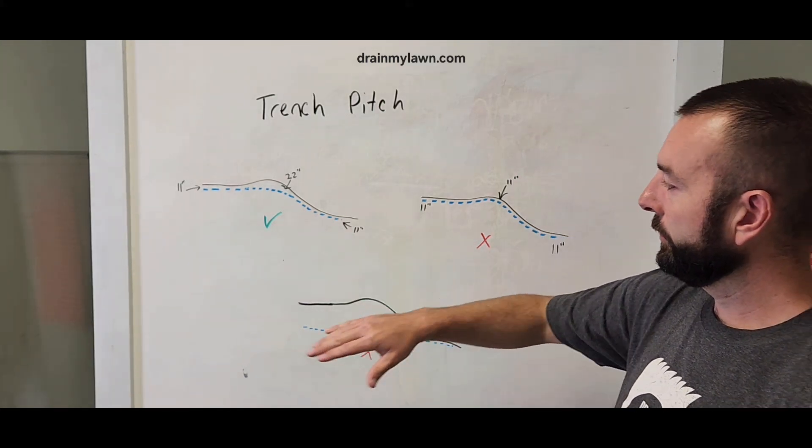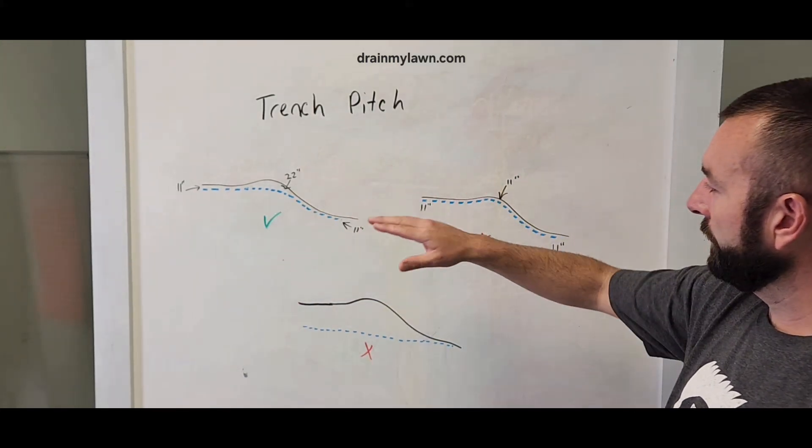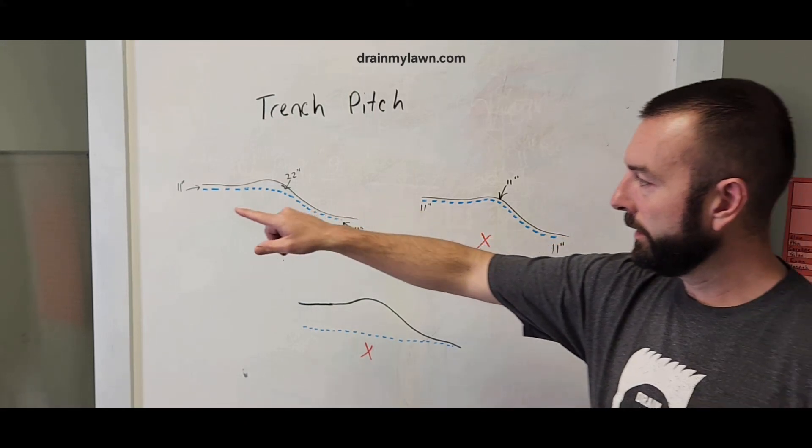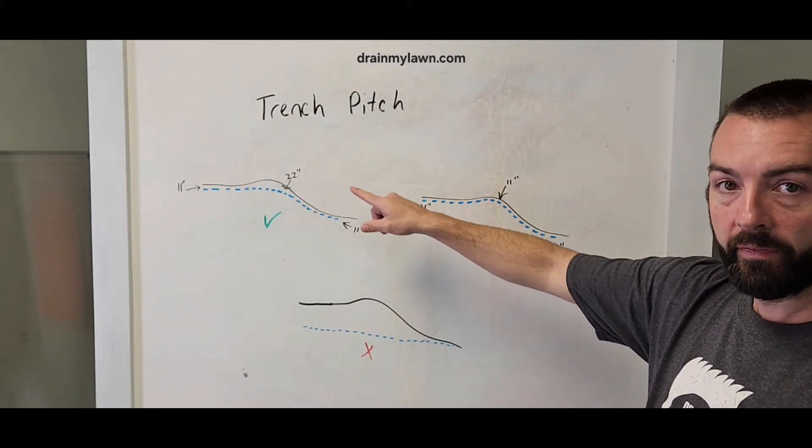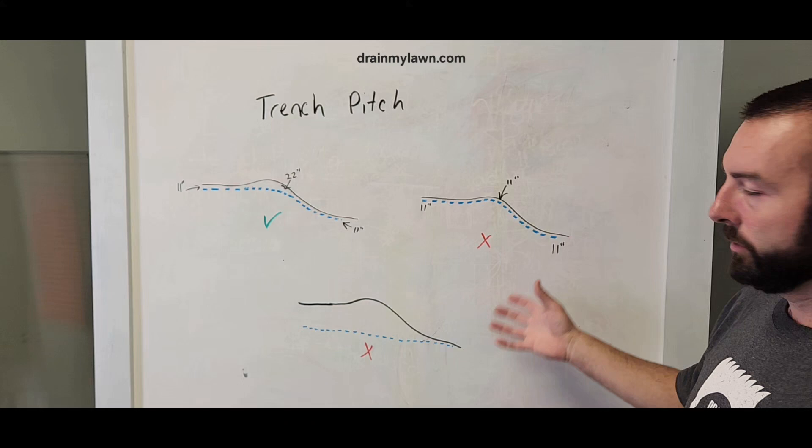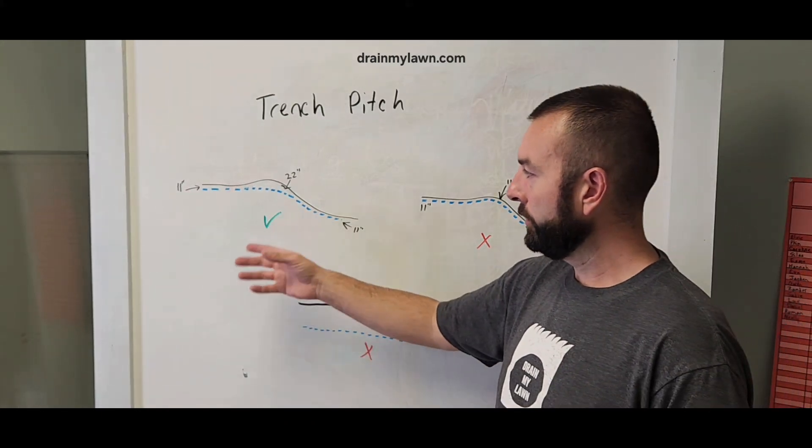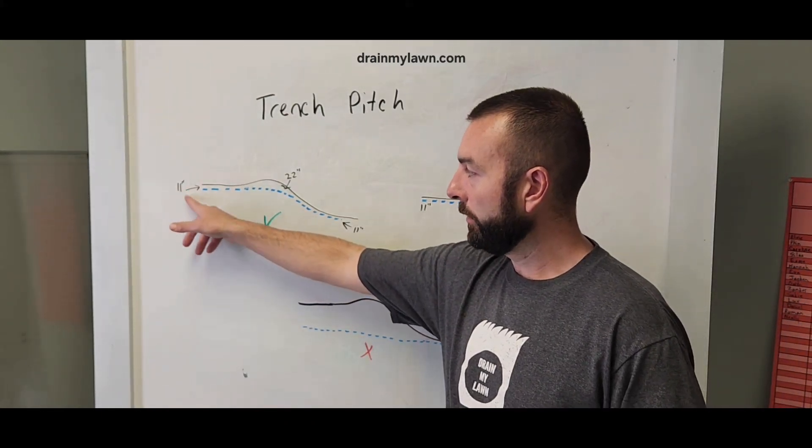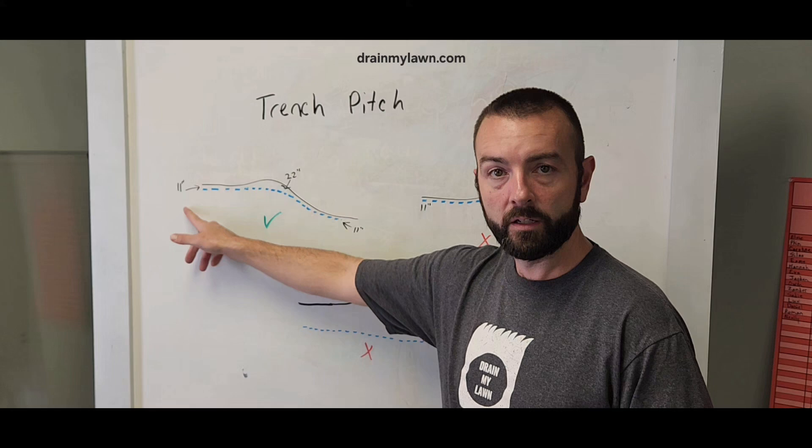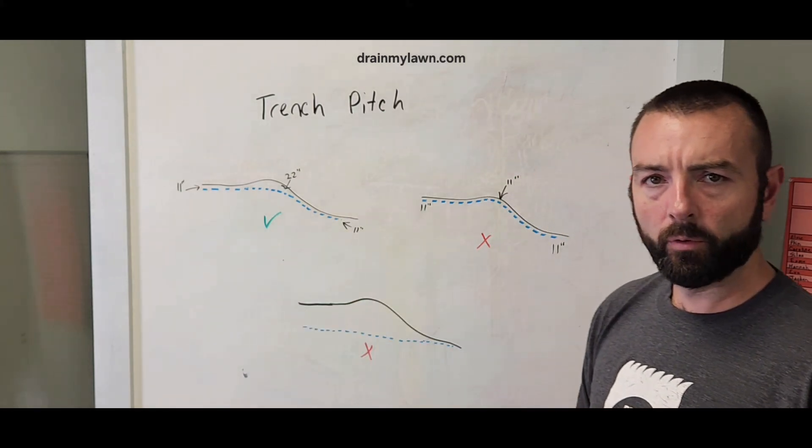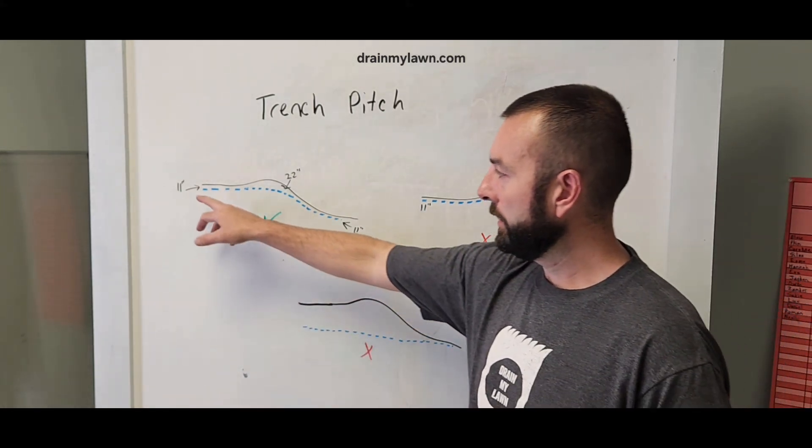So here's our first example. In each of these examples, I drew a little swale that comes up and then goes down low. I have two examples here that don't do and one to do. The right way to do is, like we talked about earlier, the 11-inch depth for the 4-inch pipe. It'd be 11 inches.